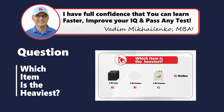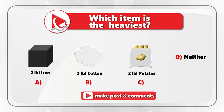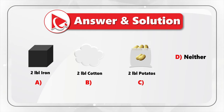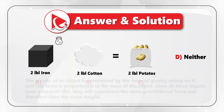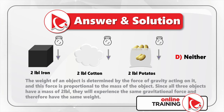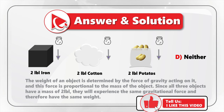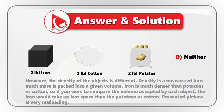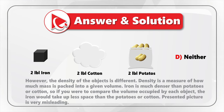All three objects — two pounds of iron, two pounds of potatoes, and two pounds of cotton — will have the same weight. The explanation is that the weight of an object is determined by the force of gravity acting on it, and this force is proportional to the mass of the object. Since all three objects have a mass of two pounds, they will experience the same gravitational force and therefore will have the same weight. The confusion here is that the density of these objects is different. Density is a measure of how much mass is packed into a given volume.